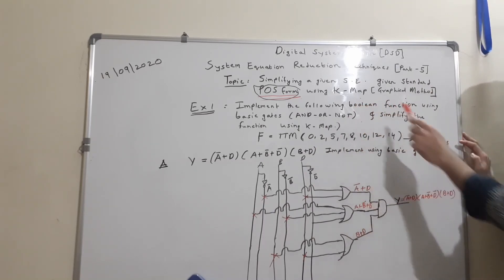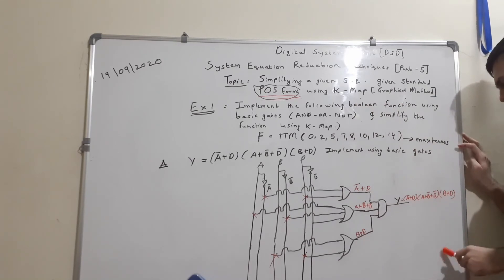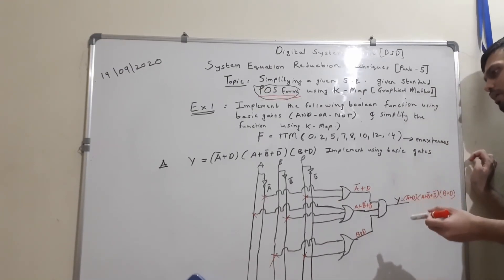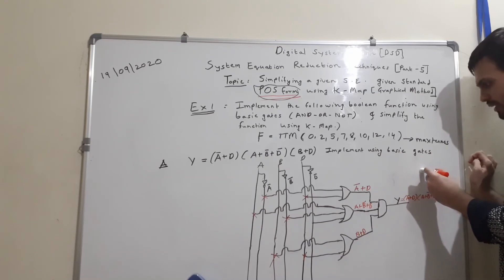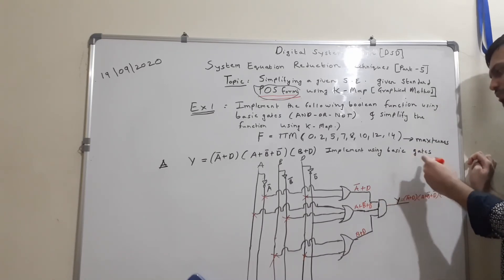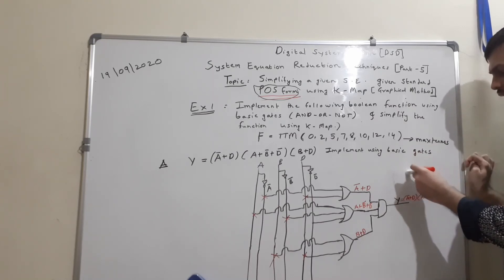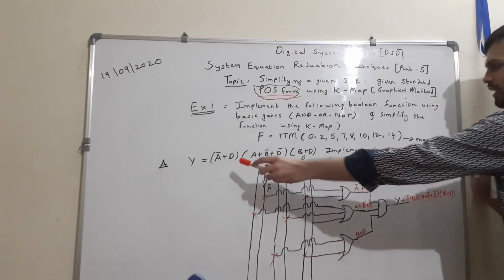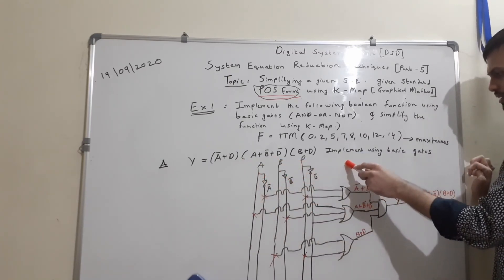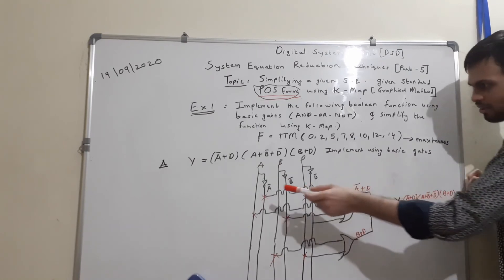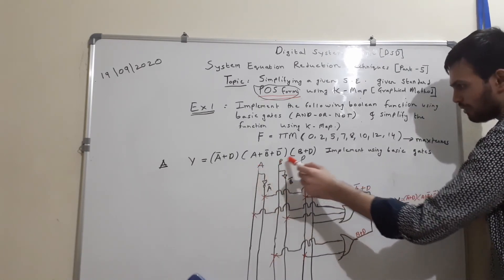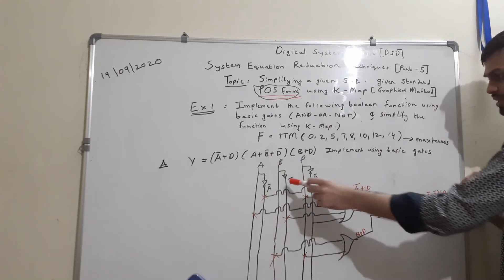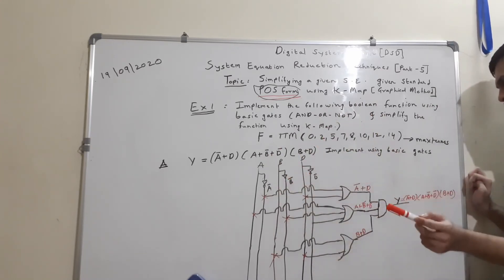The problem also asks us to implement the circuit using basic gates — AND, OR, and NOT only. We have three input variables A, B, and D. Their complements Ā, B̄, and D̄ are obtained by passing them through NOT gates.